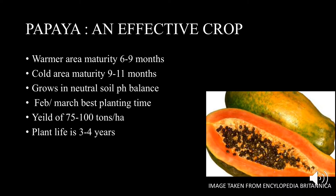As the papaya is mostly cultivated in warmer tropical areas, in these warmer areas they mature in a time of 6 to 9 months. However, in cold temperatures they take up to 9 to 11 months to mature. The papaya fruit grows best in soil that has a neutral pH balance, and from February to March is considered the best time to plant. It produces a yield of 75 to 100 tons per hectare per year and its lifespan is up to 3 to 4 years.